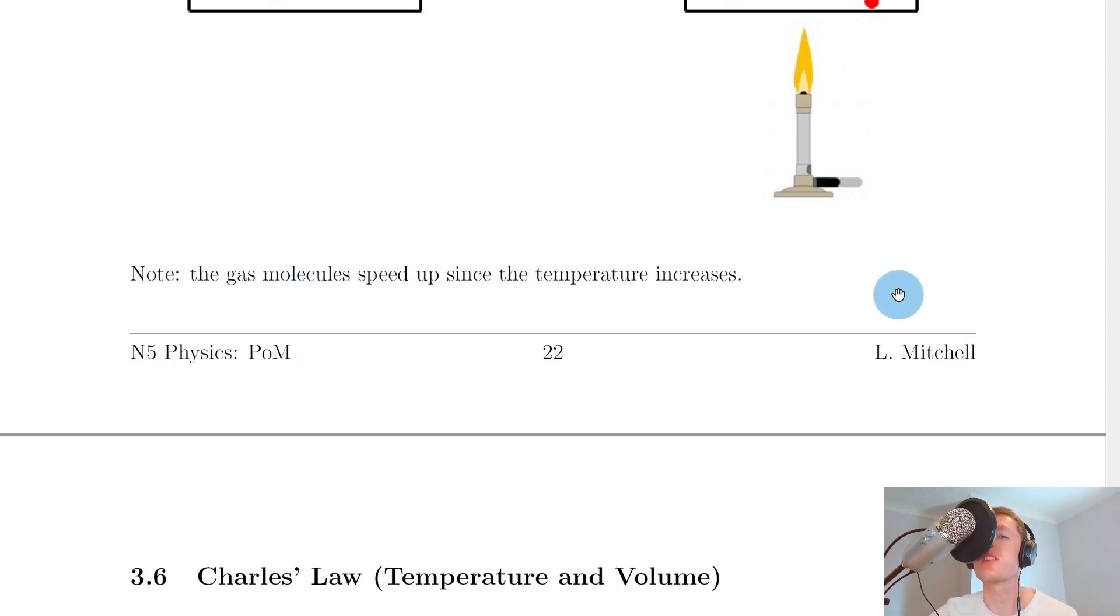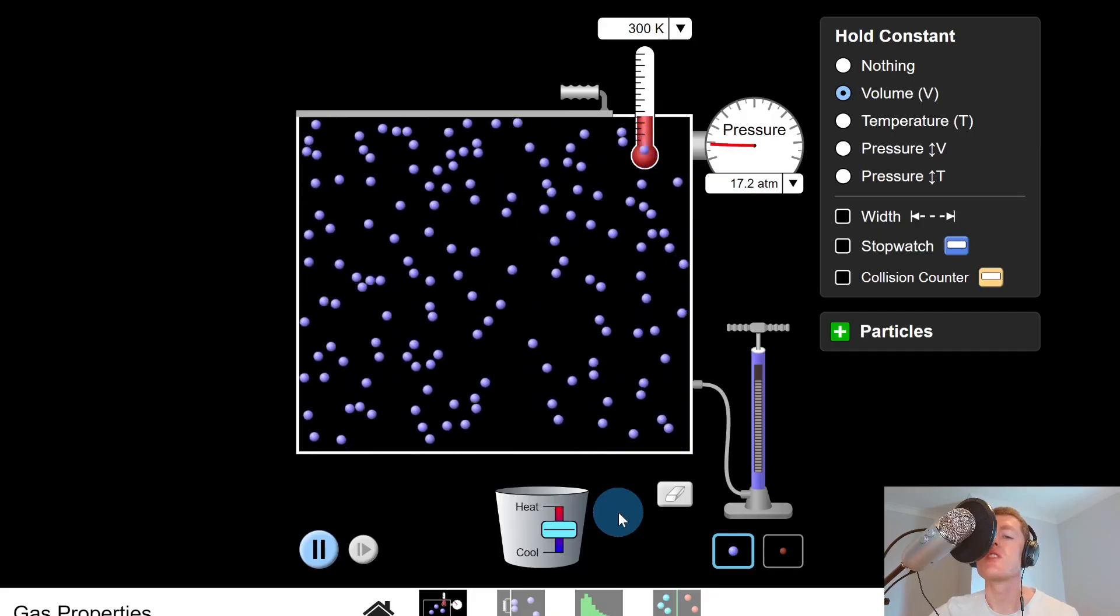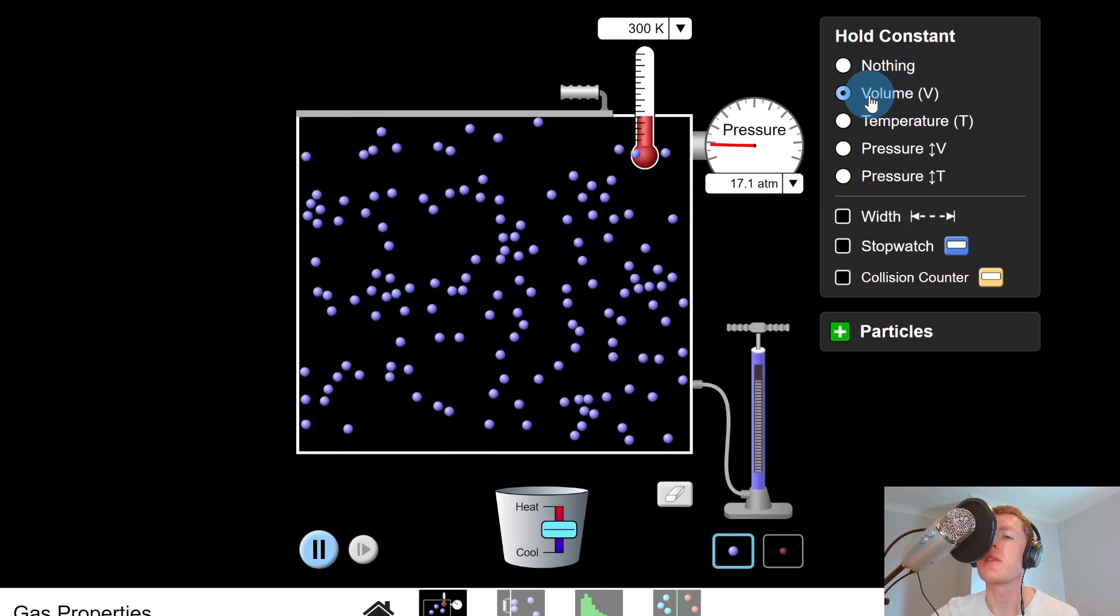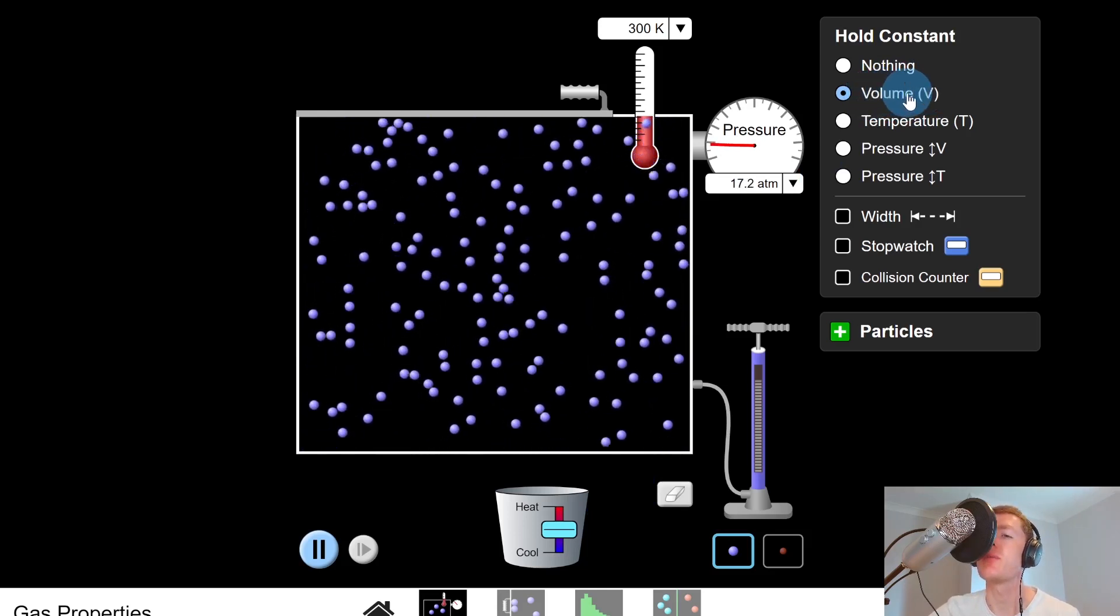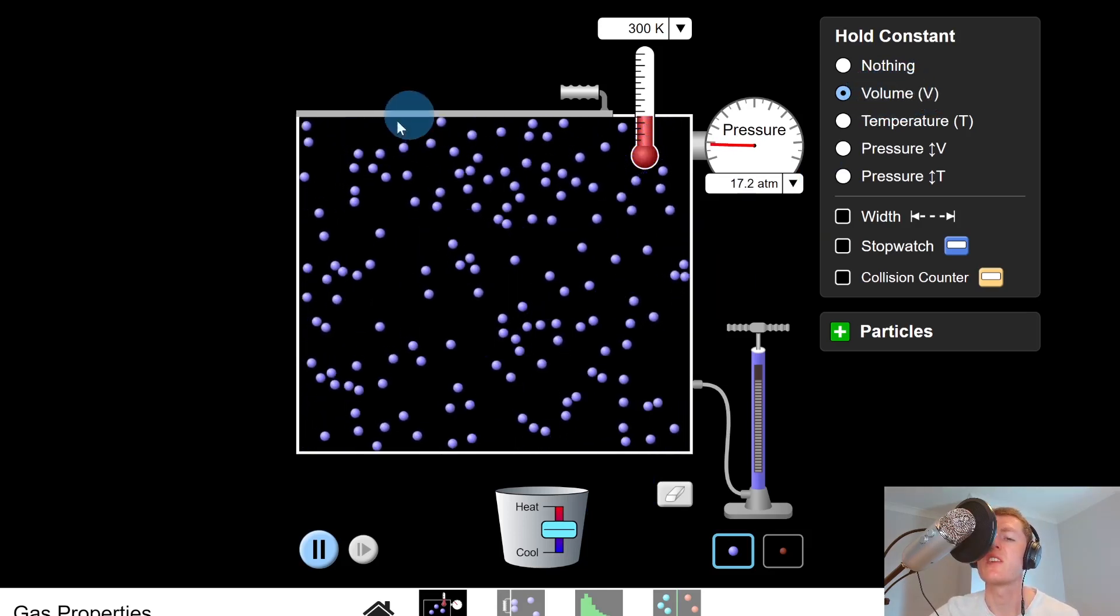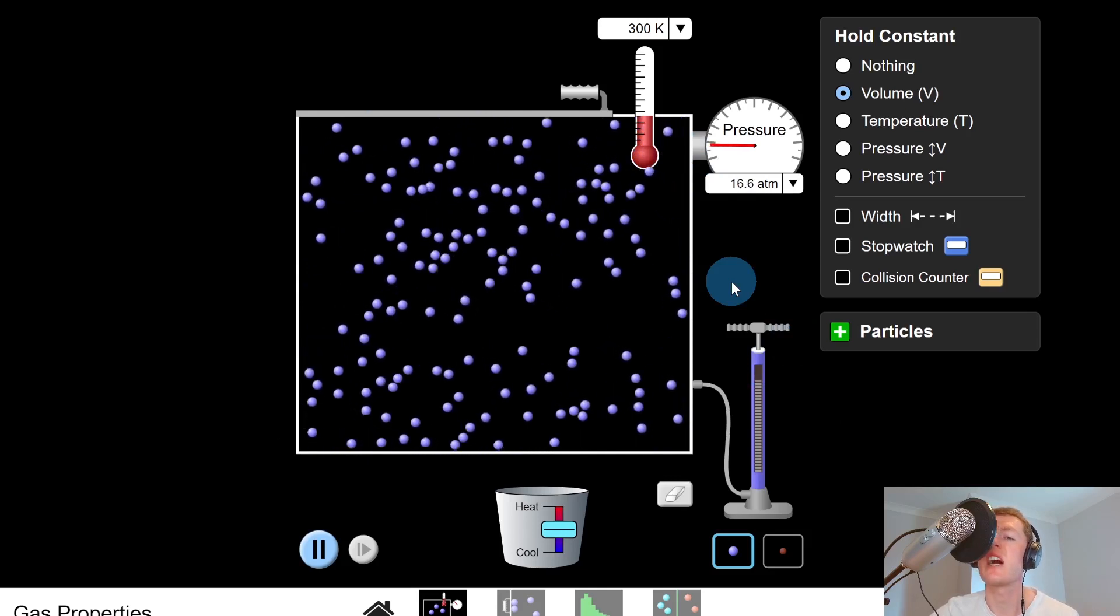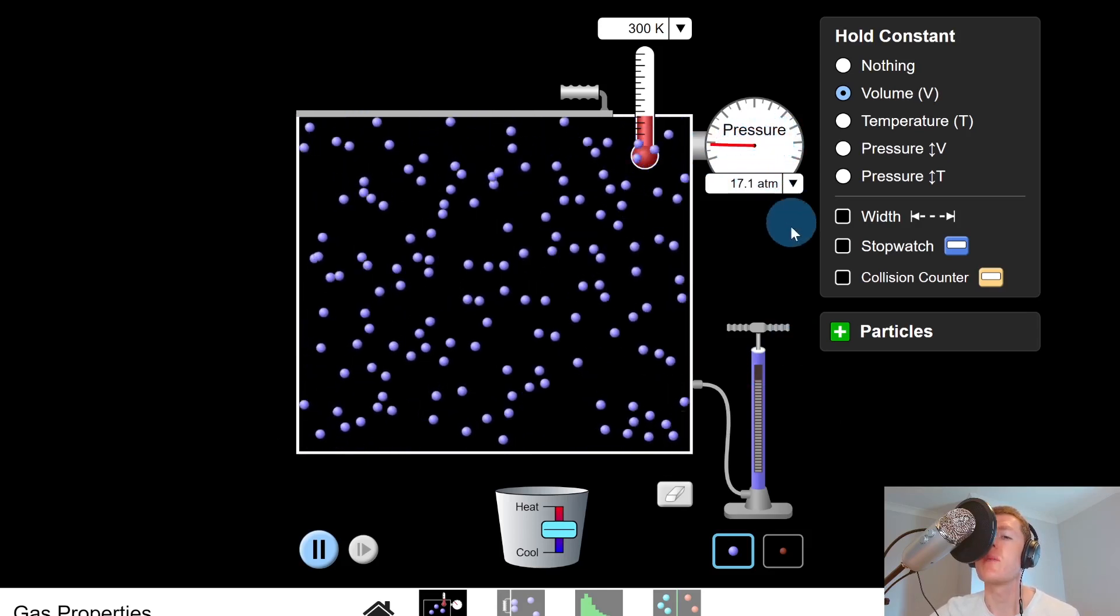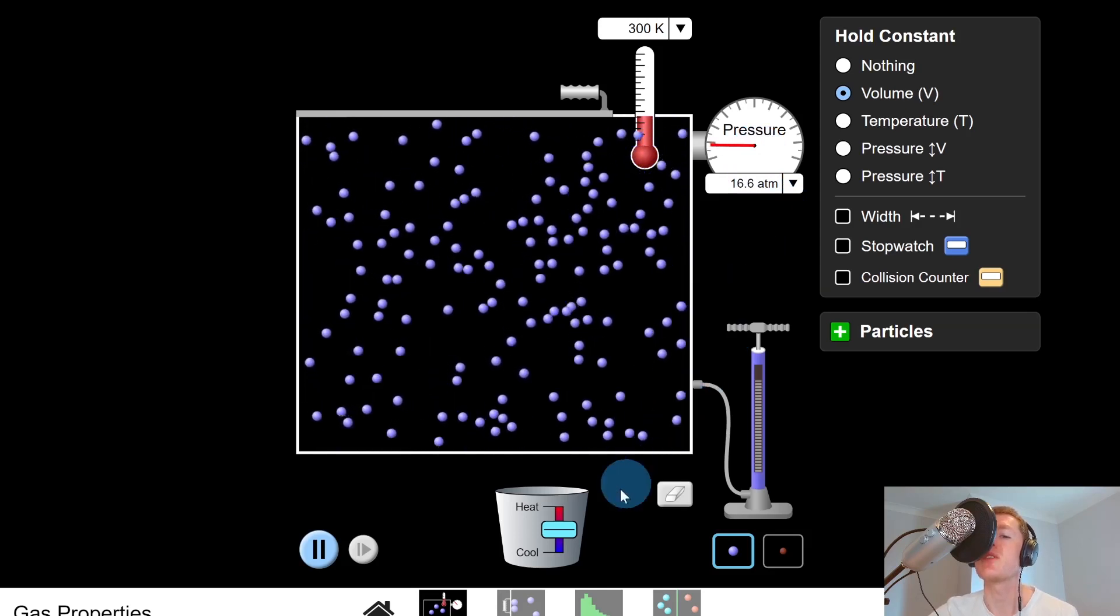I'm just going to show you a quick simulation to help you visualize this. So you can see here that I've got my particles in my sealed container and you'll notice that I'm keeping volume constant because I'm looking at how pressure and temperature are related. So we're going to keep our container a fixed size, a fixed volume.